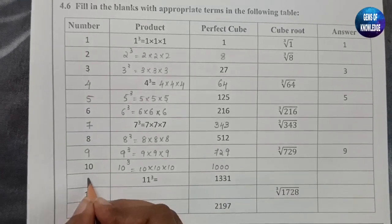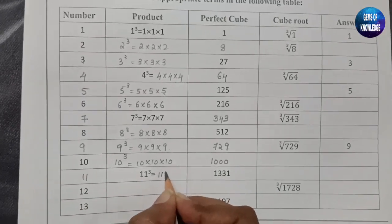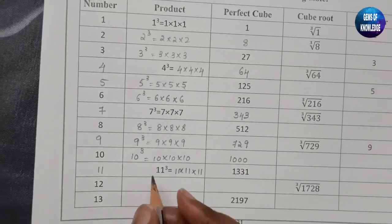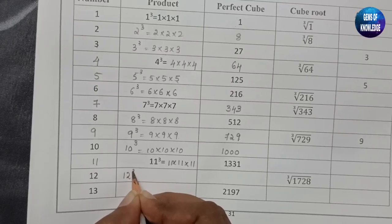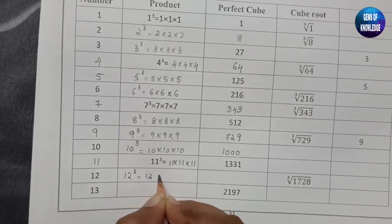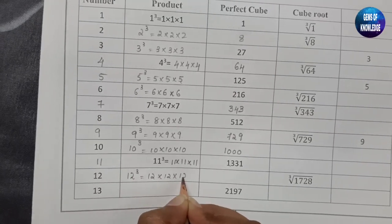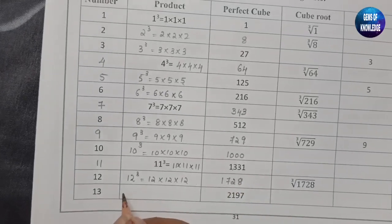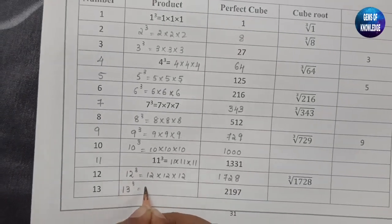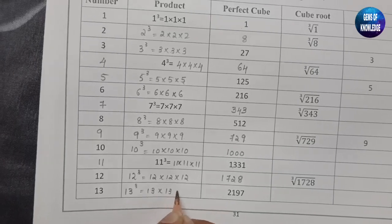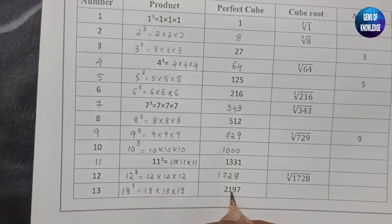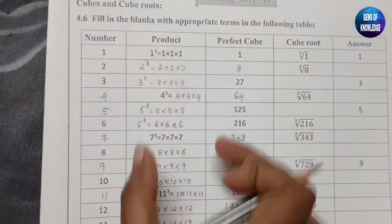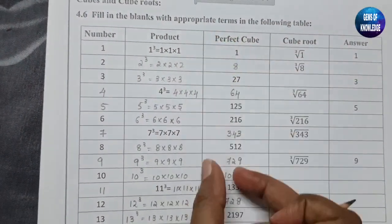Eleven cube equals eleven into eleven into eleven, which is 1331. Twelve cube — twelve into twelve into twelve — gives us 1728. Thirteen cube equals thirteen into thirteen into thirteen, which gives us 2197. These are the perfect cubes.